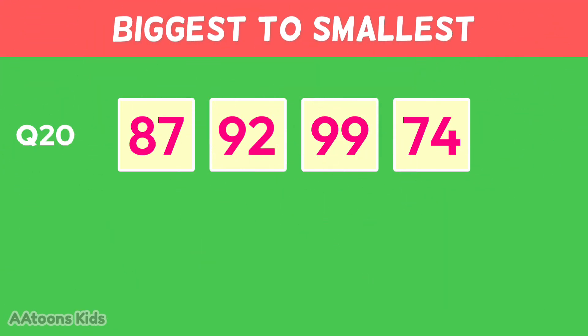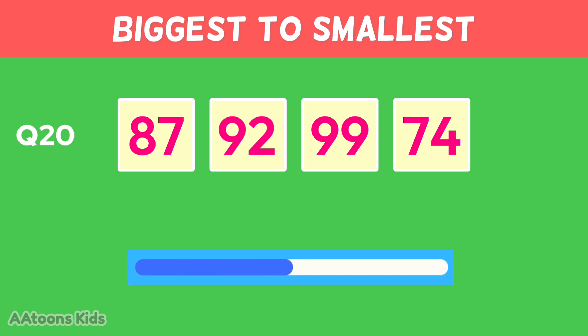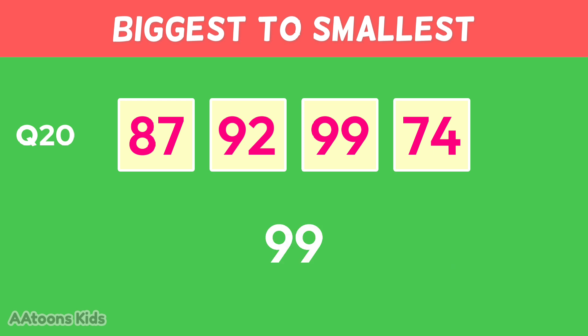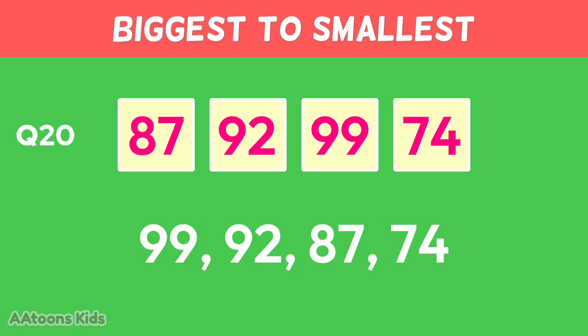Arrange these numbers from biggest to smallest: ninety-nine, ninety-two, eighty-seven, seventy-four.